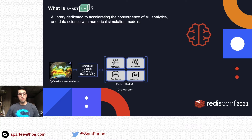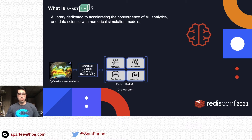So what is SmartSim? SmartSim is a library dedicated to accelerating the convergence of AI, analytics, and data science with numerical simulation models. If you're not familiar with simulations or high performance computing, don't worry — Matt will touch on it a bit later. For now, just think of them as large distributed computations that run on supercomputers or cluster systems and require large amounts of computational power.